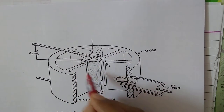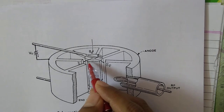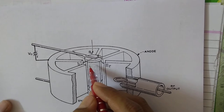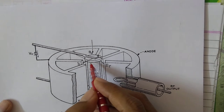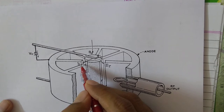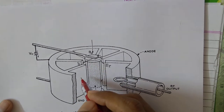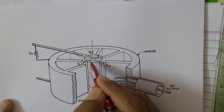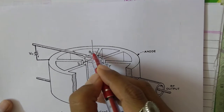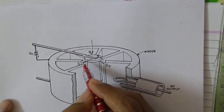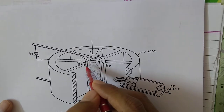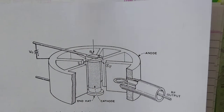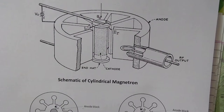We have a cathode at the center and different anode cavities, and the crossed fields are present in between cathode and anode. When electrons emitted from the cathode move towards the anode, they are influenced by the crossed field and move in a curved path. If the DC magnetic field is strong enough — present between cathode and anode — the electrons will not arrive at the anode but will return back to the cathode.